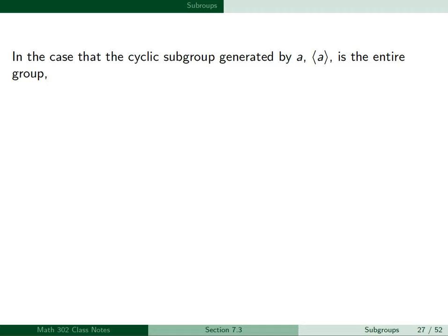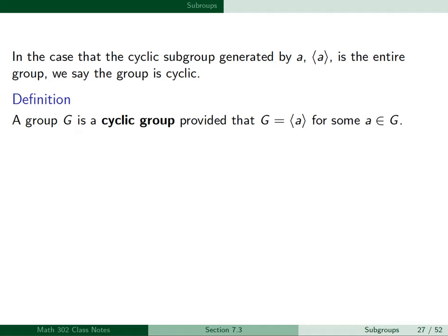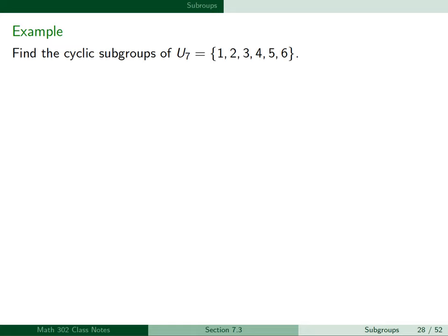In the case that the cyclic subgroup generated by A is the entire group, we say that the group is cyclic. A group G is a cyclic group provided that G equals ⟨A⟩ for some element A in G. For an example, we can find the cyclic subgroups of U7, which consists of the integers mod 7: {1, 2, 3, 4, 5, 6}. U7 is the set of units in Z7 — the elements with a multiplicative inverse — forming a group under multiplication mod 7.